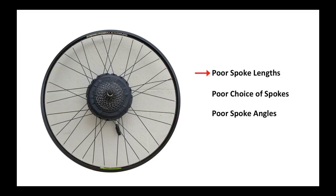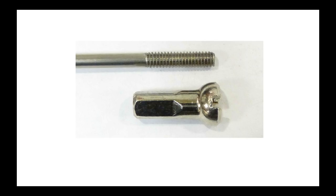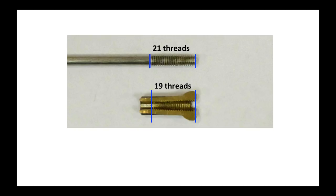We'll look first at spoke lengths. Here's a good close-up of a spoke and a nipple. The spoke has 21 threads and the nipple has 19 threads.